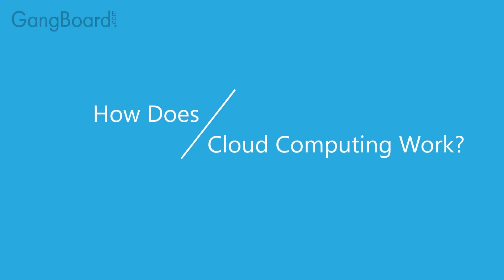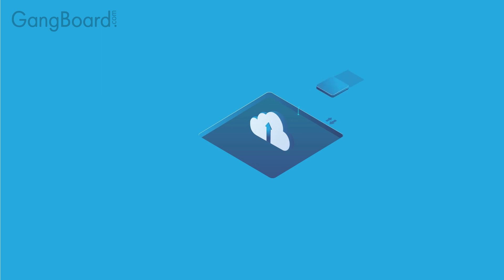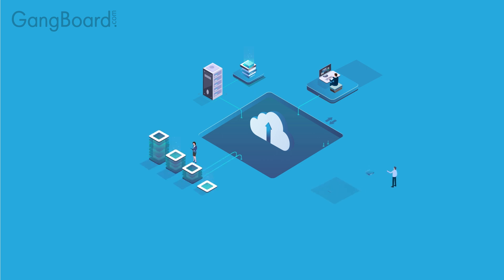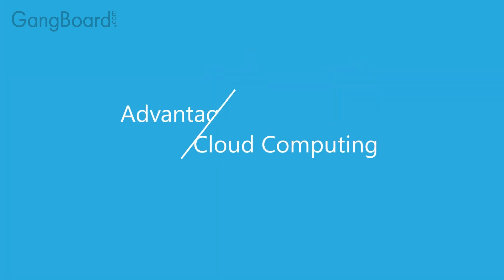How does cloud computing work? Cloud computing provides a simple way to access servers, storage, databases, and a broad set of application services over the internet. Cloud service platforms such as Amazon Web Services own and maintain the network-connected hardware required for these application services, while you provision and use what you need for your web application.